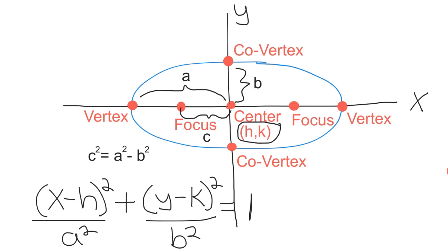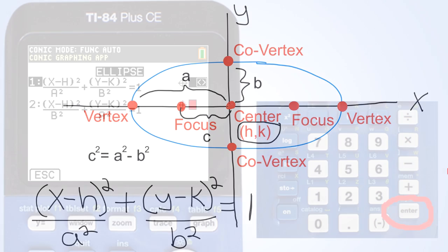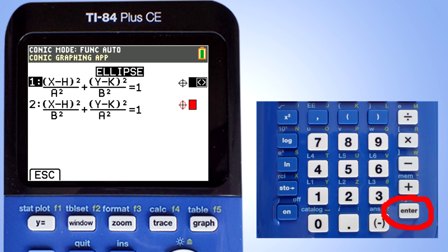The standard equation for a horizontal ellipse is X minus H squared divided by A squared plus Y minus K squared divided by B squared equals 1. Going back to the calculator, let's choose 1 for the horizontal ellipse and press enter.